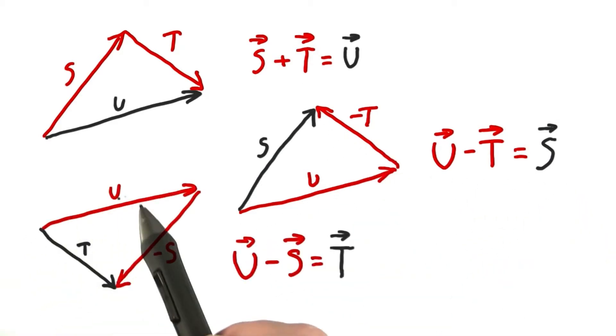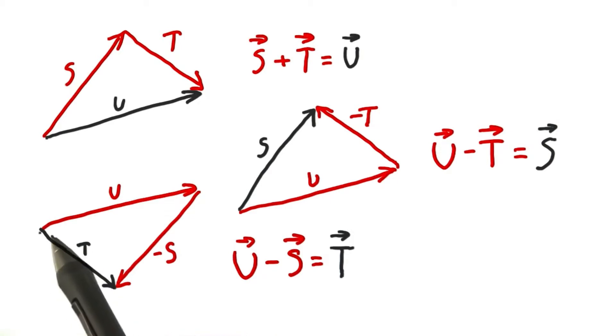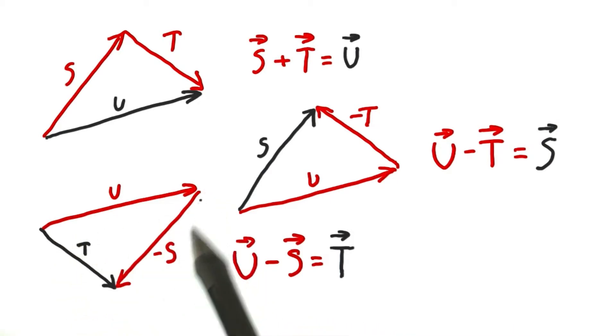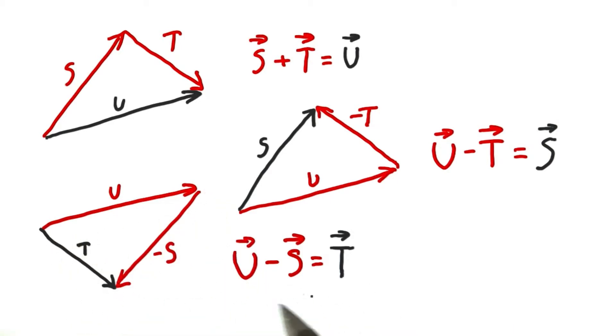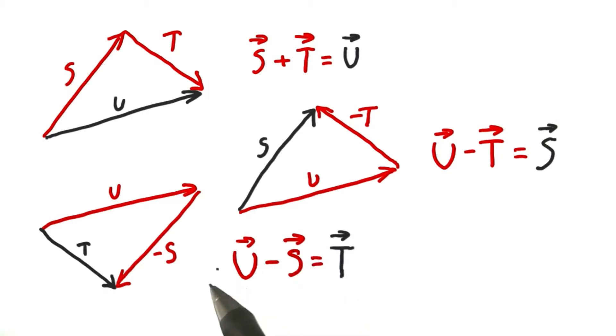And we can go the other way around — for example, U minus S equals T. One way to think about vector subtraction is that you're instead adding a vector going the opposite direction, as shown here.